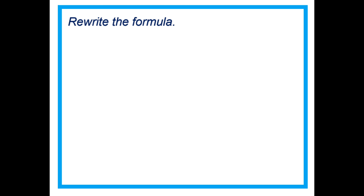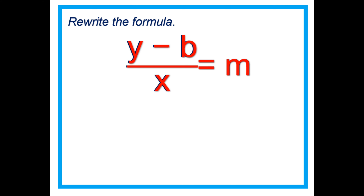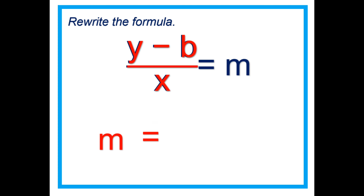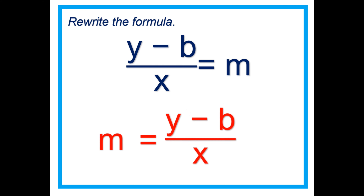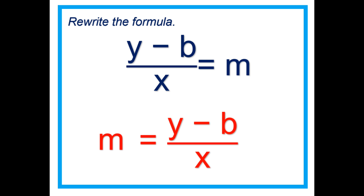Let's rewrite the formula. Just like this: M equals Y minus B divided by X. That's it.